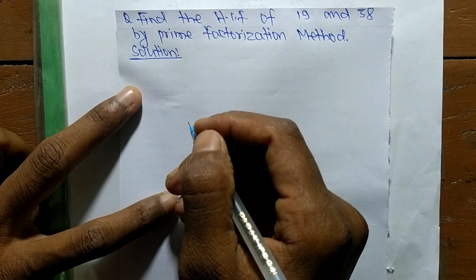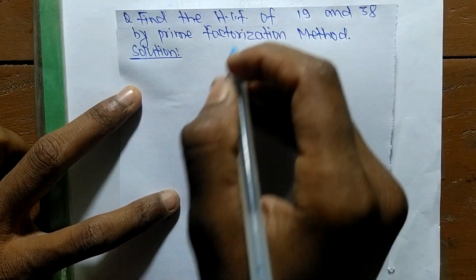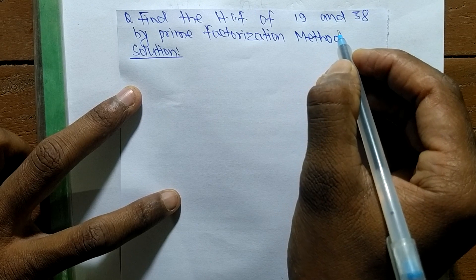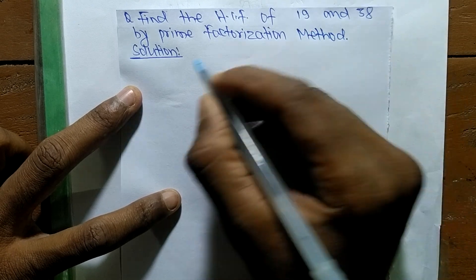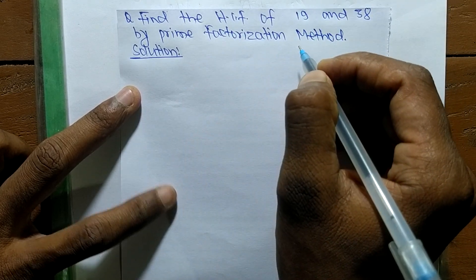Today in this video we shall learn to find the HCF of 19 and 38 by the prime factorization method.